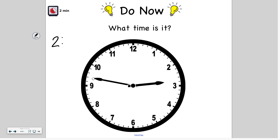Now I'm going to look at the minute hand. I'm going to count by 5s until I get all the way around to the exact minute. So: 5, 10, 15, 20, 25, 30, 35, 40, 45. One more minute is 46, and another minute is 47, because 45 plus 2 is 47. So the exact time is 2:47.